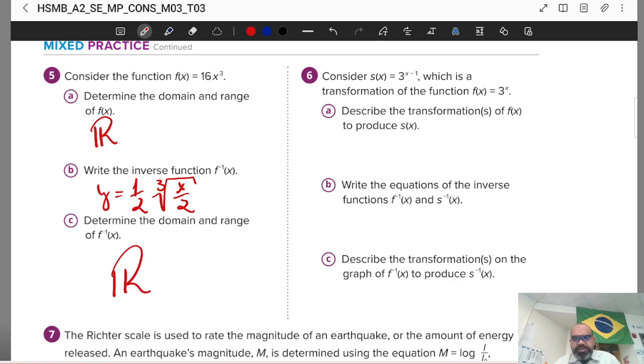Number seven. The function here describes the transformation of this guy here. Guys, the main function is 3 to the x power. What is the change there? It's minus 1 to the power. X is minus 1. Remember, when x is negative, it's the opposite direction. Then one unit to the right.